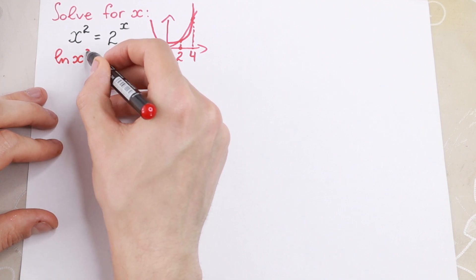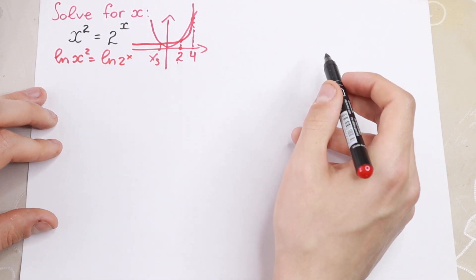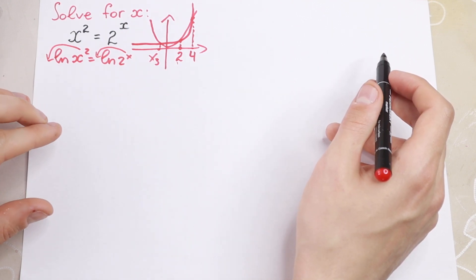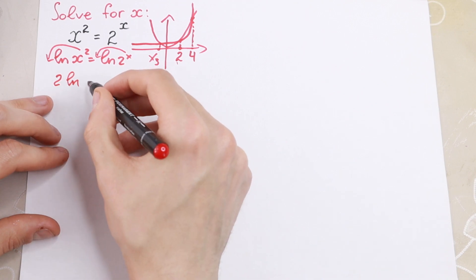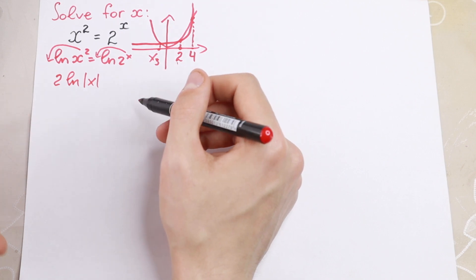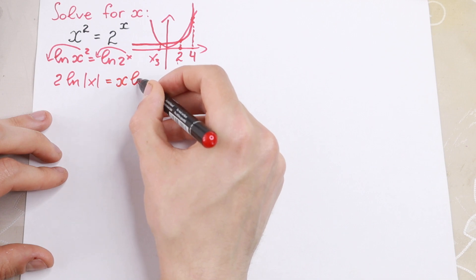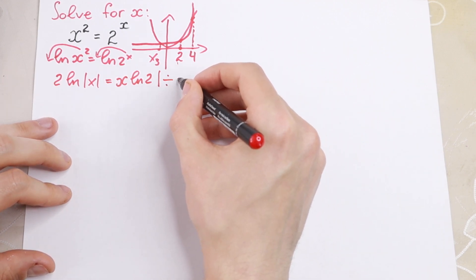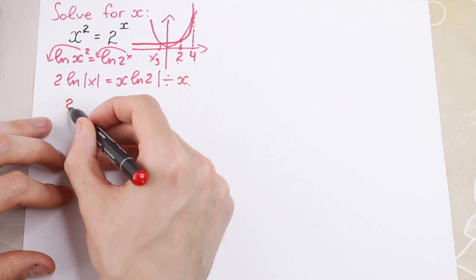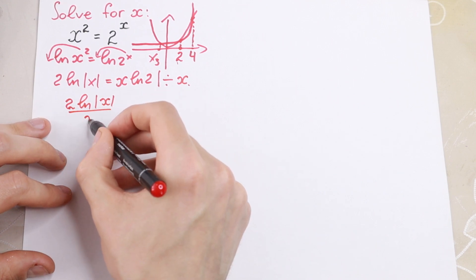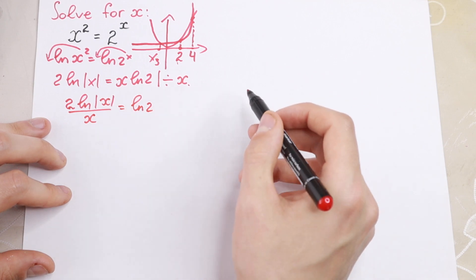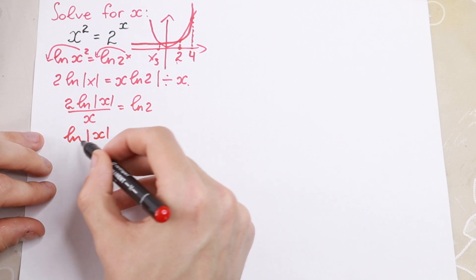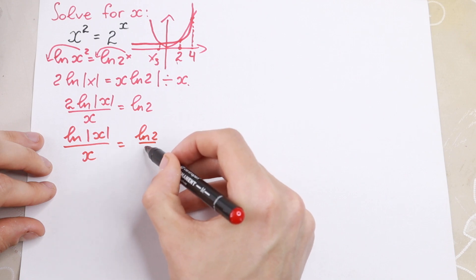We take the natural log of both sides: natural log of x squared equals natural log of 2 to the x. We need to account for the absolute value of x since x can be negative or positive. So we have 2 times natural log of |x| equals x times natural log 2. Dividing both sides by x, then by 2, we get: ln|x| / x = (ln 2) / 2.